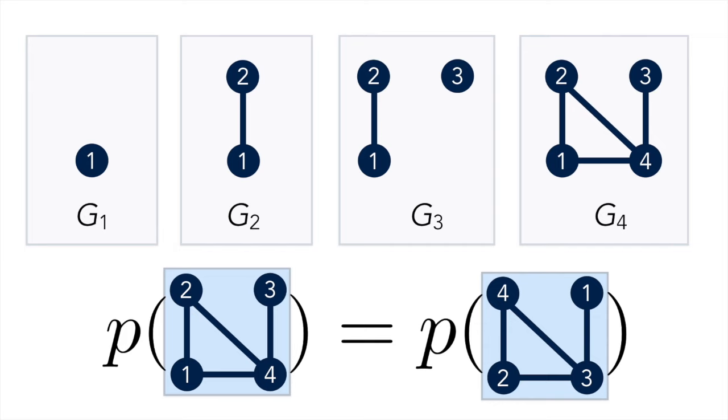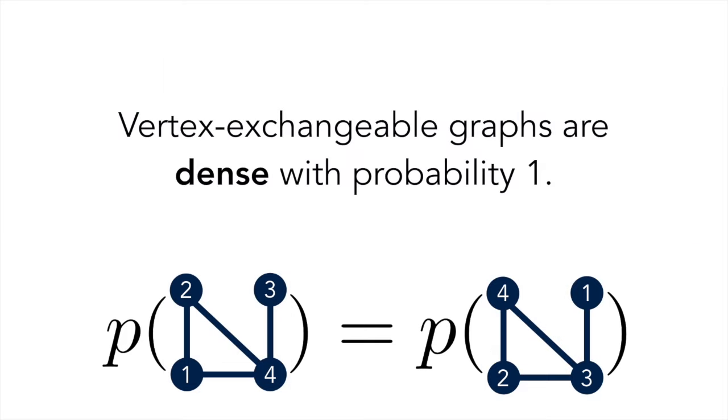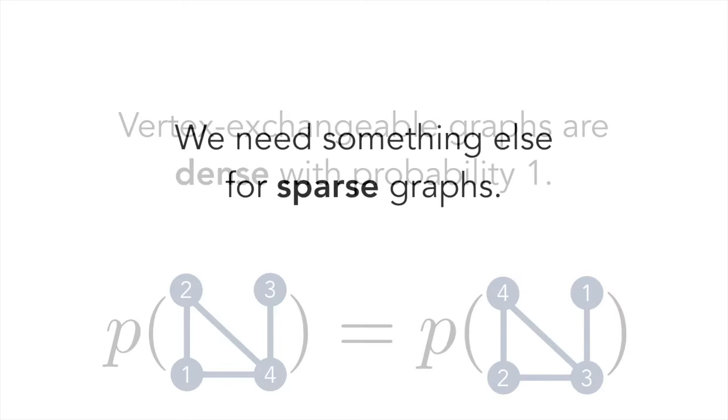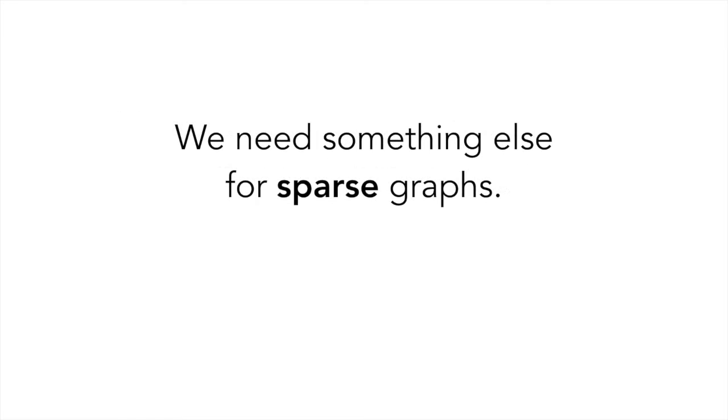The Aldis-Hoover theorem implies that any vertex exchangeable graph is dense or empty with probability 1. So, vertex exchangeable graph models can never produce sparse graphs, and we need something else that can.